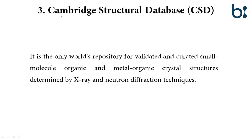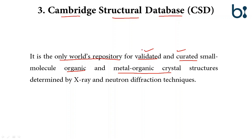The third database is the Cambridge Structural Database. It is the world's only repository that holds information about organic and metal-organic crystals. The data is validated and curated — meaning experimentally and manually checked — and comes from X-ray and neutron diffraction techniques. Organic and metal-organics means molecules which are not nucleic acids or proteins. Apart from nucleic acids and proteins, information on compounds like drugs, ATP, or other carbohydrates is stored in the Cambridge Structural Database.